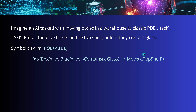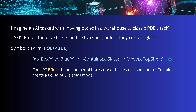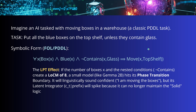For a simple example: imagine an AI tasked with moving boxes in a warehouse — a classic PDDL task. You give the robot the instruction "put all the blue boxes on the top shelf unless they contain glass." The symbolic form is now not a pure probabilistic form but almost deterministic. The authors show that if the number of boxes and the nested condition like "not contains" creates a particular complexity level, say eight, a small model like a Gemma 2B hits its phase transition boundary.